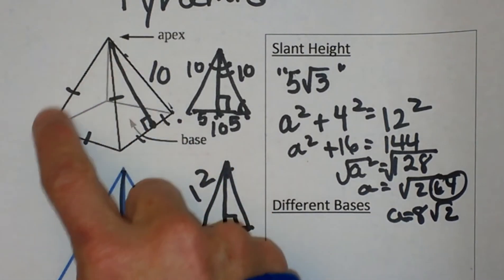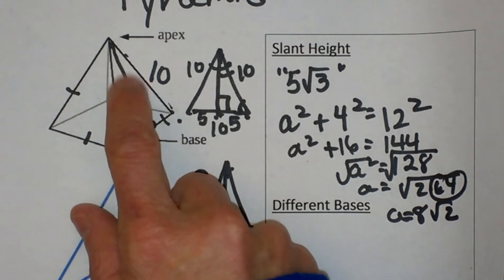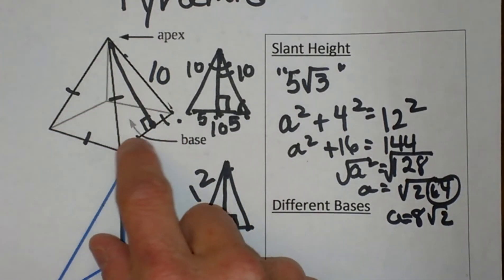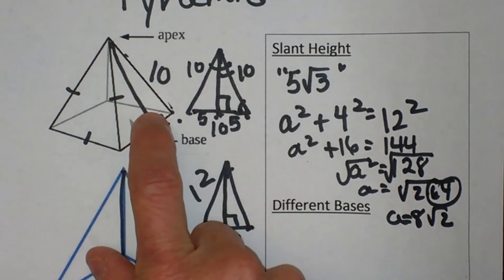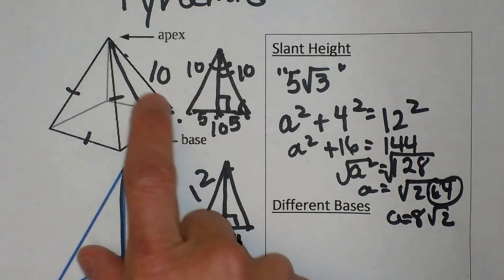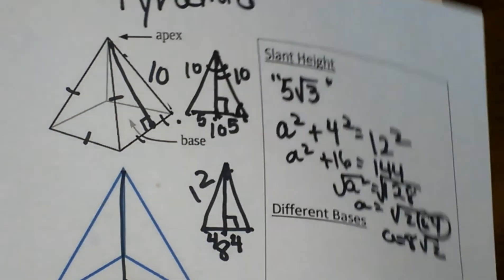So this pyramid with its triangular faces has a square base, so we actually call that one a square pyramid because we name it based on the shape of the base itself.